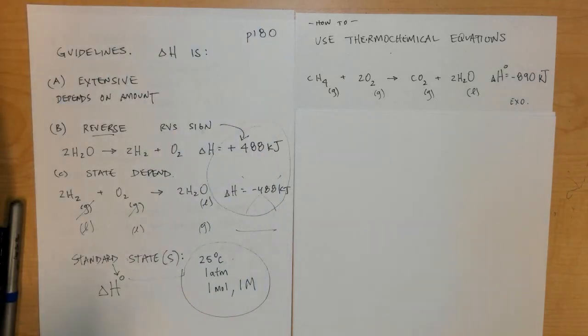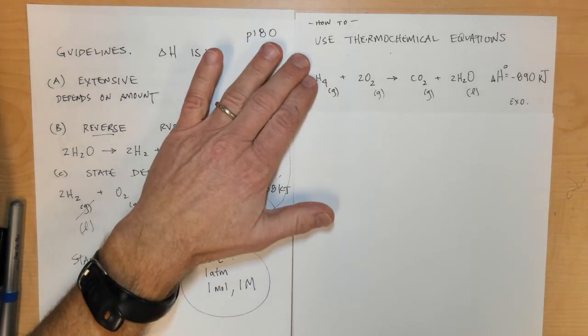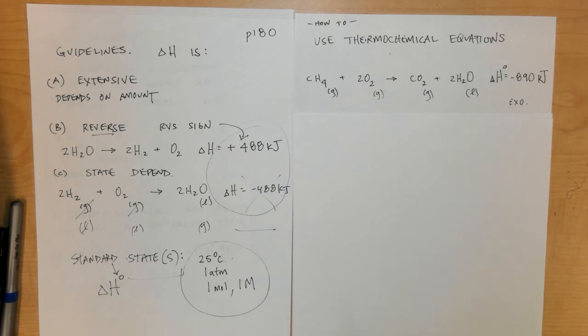The only reason we knew that is because there was a little minus sign, and we know that exothermic processes have a negative value because energy is given off from the system to its surroundings. These chemicals right here are our system.